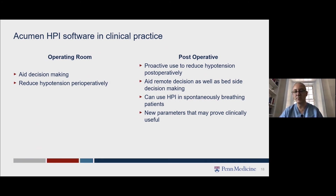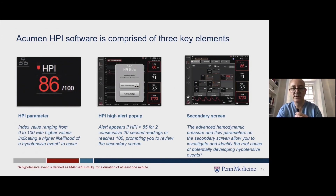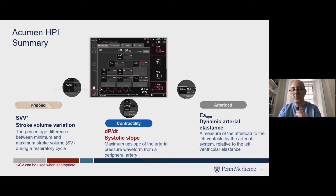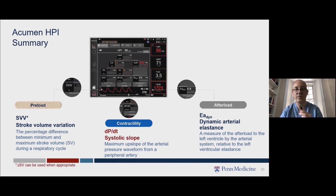The Acumen HPI software is comprised of three key elements. The first is the HPI parameter, which I've already shown you. When this reads more than 85 for two consecutive 20-second readings or reaches 100, an alarm pops up prompting you to go to the secondary screen. On the secondary screen we can then view stroke volume variation, dP/dT, and Ea-dyne, and work out what the likely cause of the hypotension will be.